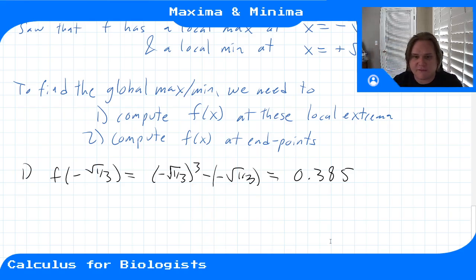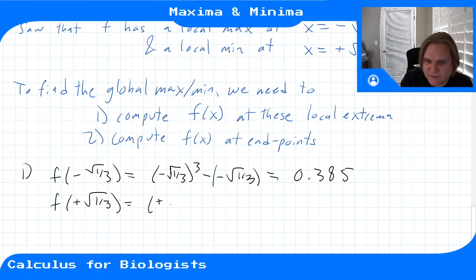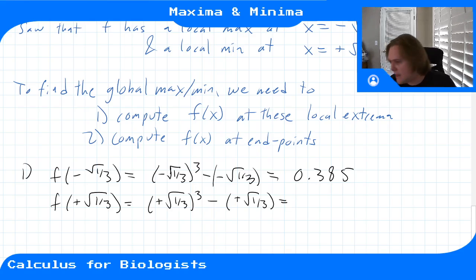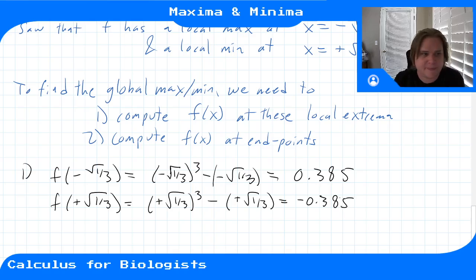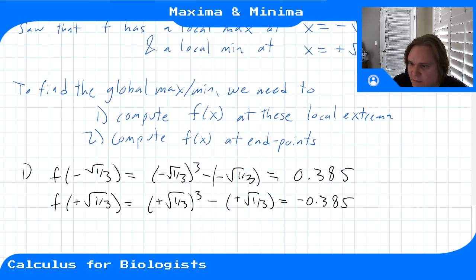For the other critical point: f(+√(1/3)) = (+√(1/3))³ - (+√(1/3)) ≈ -0.385. We've computed f at both local extrema: the local max gives 0.385 and the local min gives -0.385, as expected.